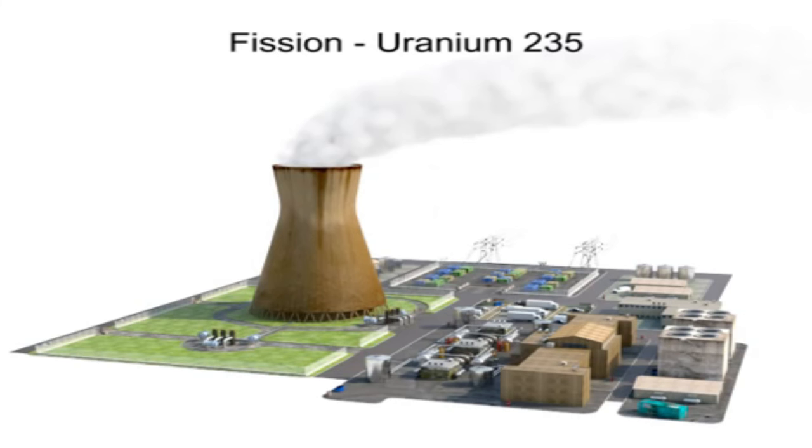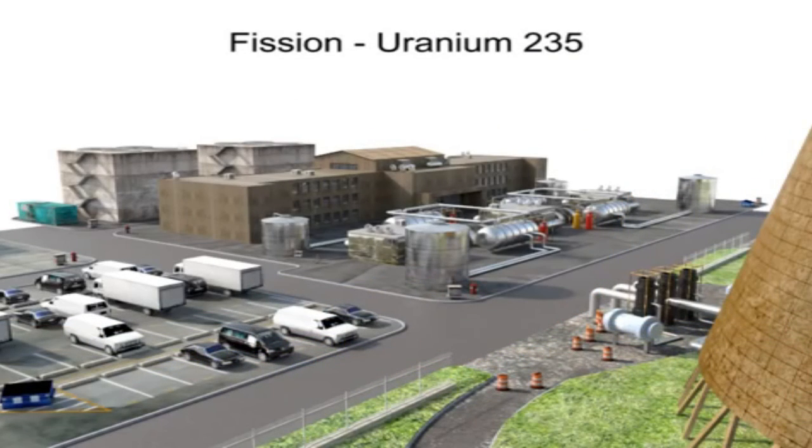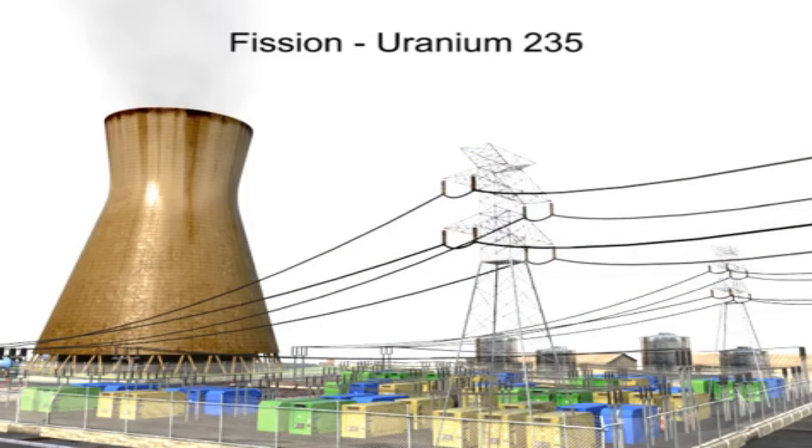The nuclear fission process is also the source of energy used to operate nuclear power plants. In a controlled environment, the tremendous heat generated by splitting uranium-235 is used to produce steam that drives turbines to generate electricity.